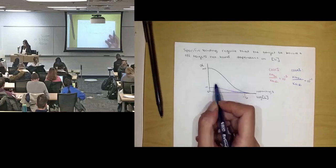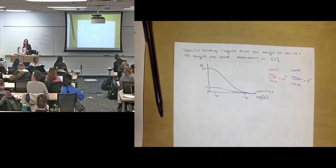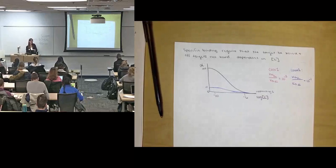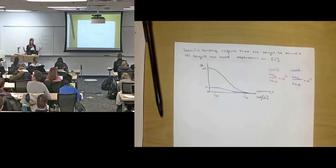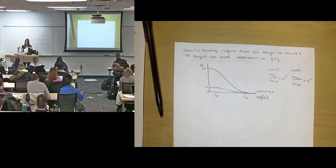And really what ends up happening is in a case like this, you can't ever really bind up all of one thing and not the other. The KDs are too close together. With our universal binding curve, we need at least two orders of magnitude in order to actually have binding to only one thing instead of the other.